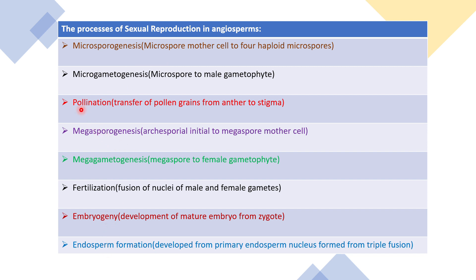The third process is pollination — the transfer of pollen grains from anther to stigma. Then megasporogenesis takes place, in which the megaspore mother cell is formed from the archesporial initial. Megagametogenesis follows, forming the female gamete from the megaspore. Then fertilization occurs — the fusion of male and female gamete nuclei — followed by embryogenesis and endosperm formation by triple fusion.